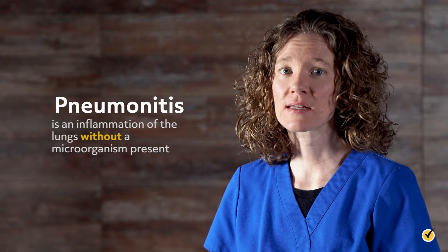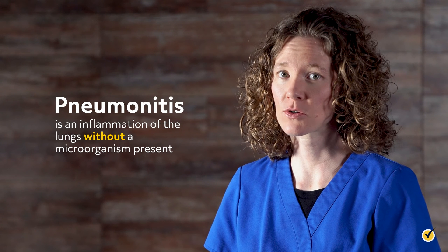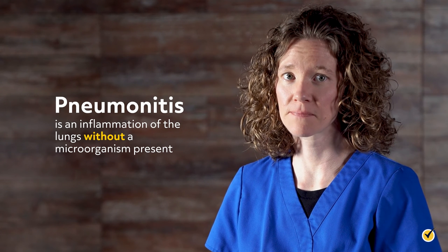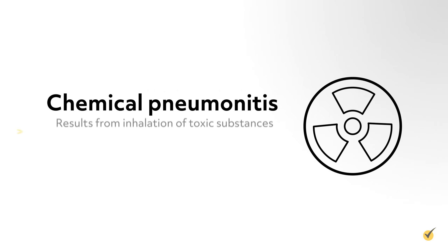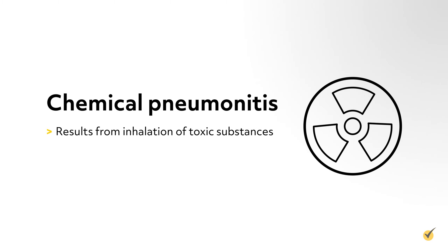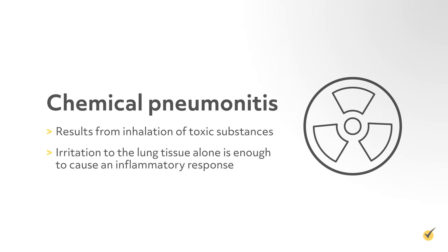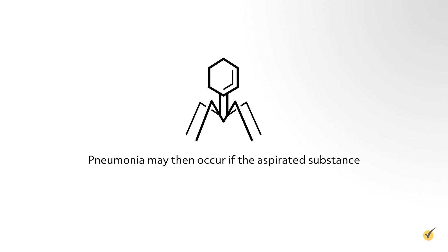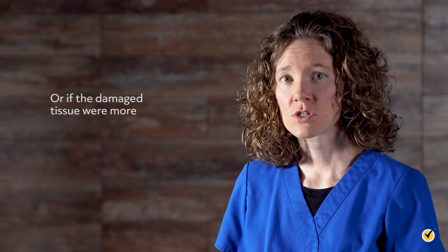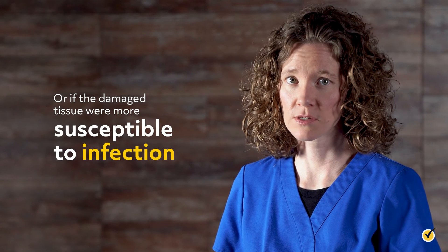Strictly speaking, pneumonitis is an inflammation of the lungs without a microorganism present. Chemical pneumonitis results from inhalation of toxic substances when irritation to the lung tissue alone is enough to cause an inflammatory response. Pneumonia may then occur if the aspirated substance contains pathogens or if the damaged tissue were more susceptible to infection.